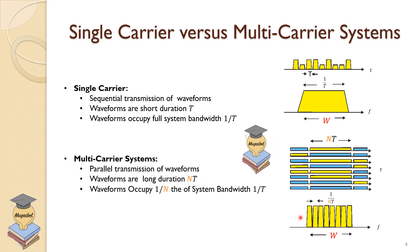We have parallel transmission of waveforms. We have one transmission here, one transmission here, one transmission here, and so on. Waveforms are now longer in duration by NT. And of course, the bandwidth occupied will be less by a scale of 1 over N. So we get 1 over NT.